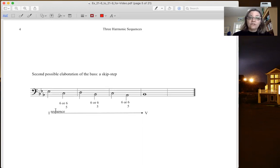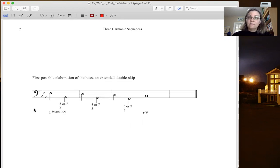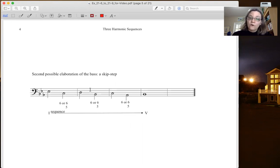The second elaboration is to do a skip step. In this case, it's a triad in first inversion or a seventh chord in first inversion. So double skip, extended double skip, down a fifth up a fourth, or skip step.